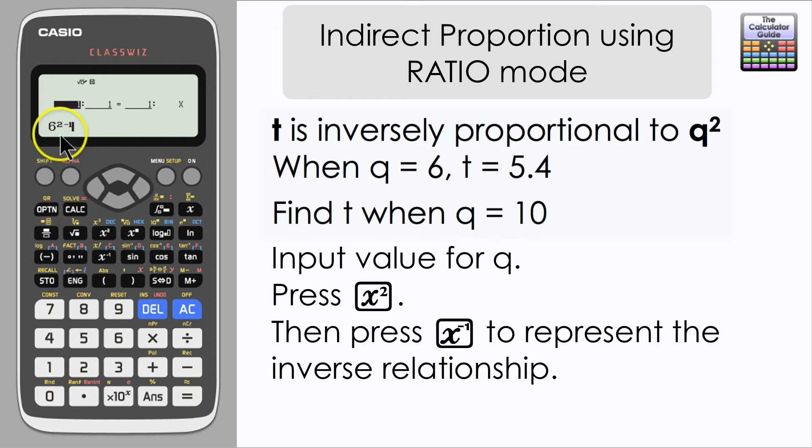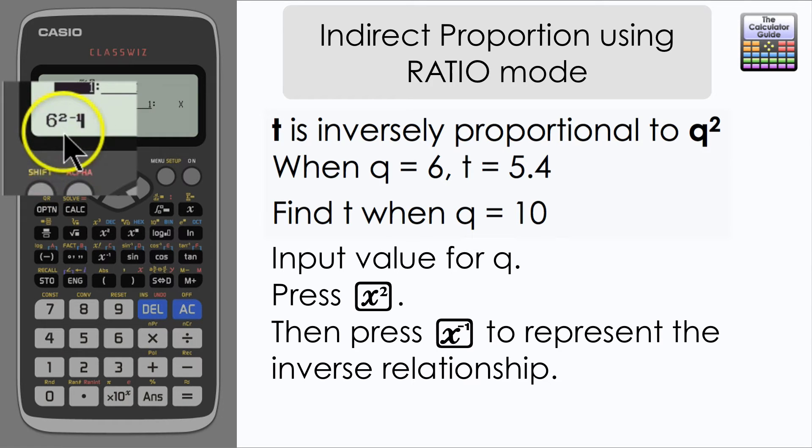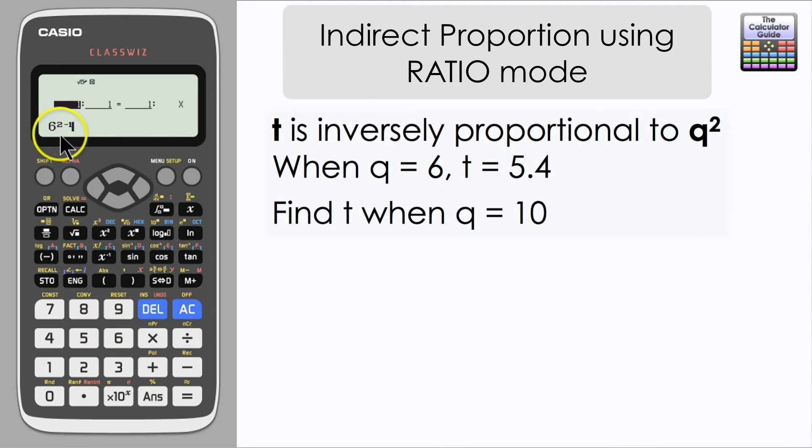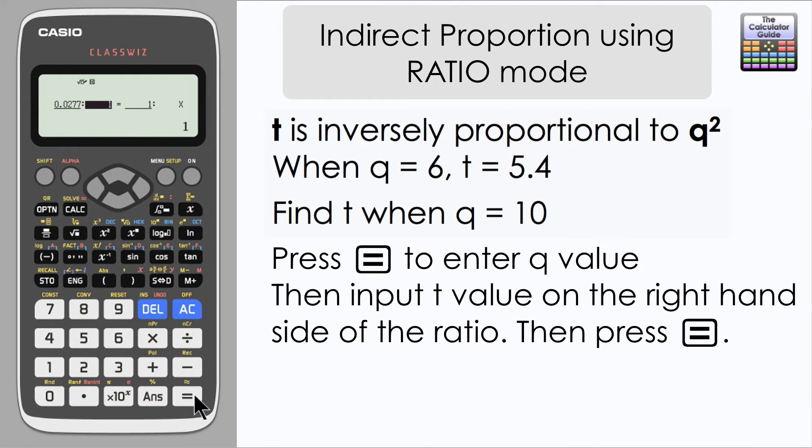We need to be wary of how the calculator has displayed this. It looks like 6 to the power of 2 minus 1 but that wouldn't be correct. That would be 6 to the power of 1 which is 6. We need to think of this as being 6 squared. Then imagine some brackets around it raised to the power of minus 1. Press equals and the calculator has inputted that value as a decimal for us. It's actually the equivalent of 1 over 36.